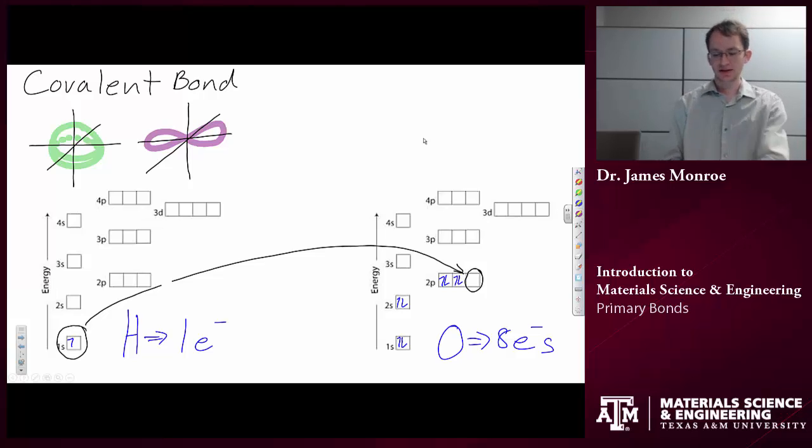Well, what happens is, again, this is one way that shells can kind of deform, is you get something called SP hybridization. And so, what happens is, this S shell and this P shell kind of combine in a unique way, and you'll get kind of a new shape of P shell that is kind of like this, where one side, one lobe is larger than the other.